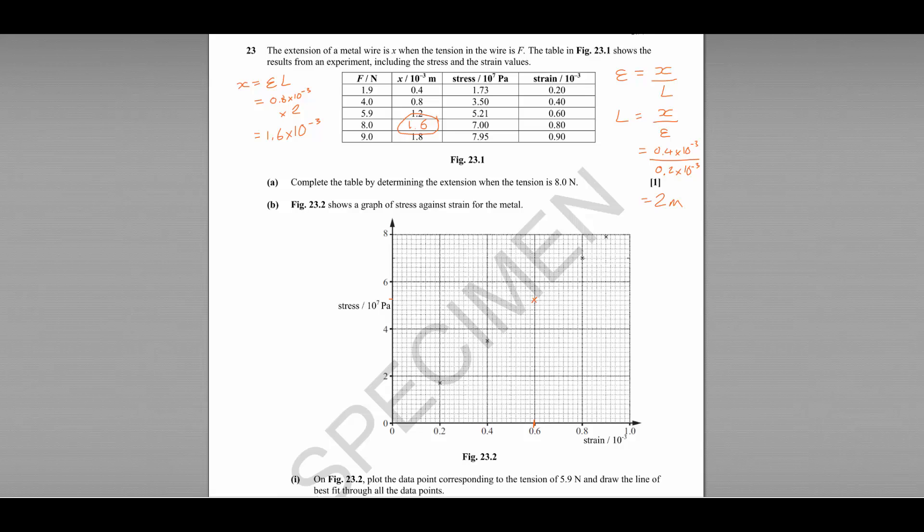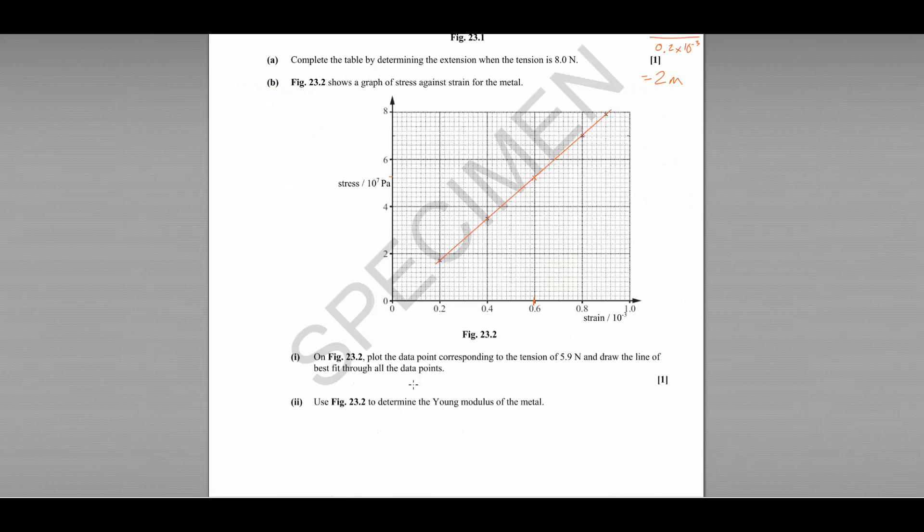And we need to draw a line of best fit through the points. So we want a straight line that passes through or as close to as many points as possible with an even spread of points either side of the line. We can draw a line that pretty much goes through all of them here.